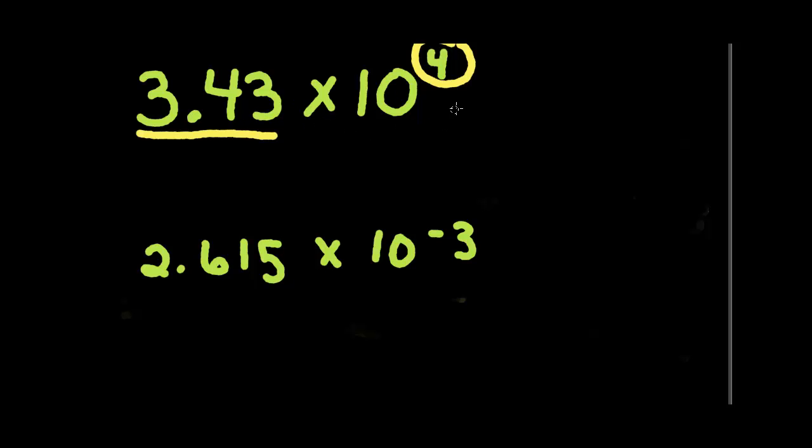So in order to get bigger, remember on the number line, numbers get bigger when we move in that direction. This here has a negative number, so we know that our number needs to get smaller. And in order to get smaller, we need to move in this direction.